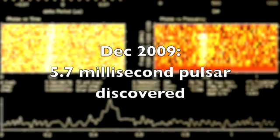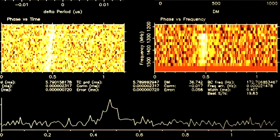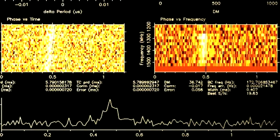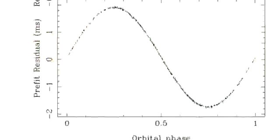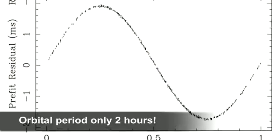In 2009 a 5.7 millisecond pulsar was discovered on our supercomputers and our colleagues at Jodrell Bank soon realized that this star was orbiting another object every two hours.